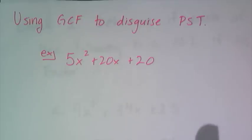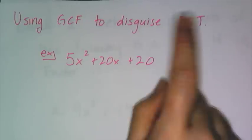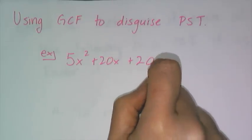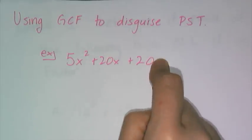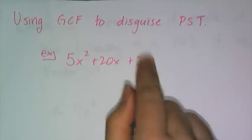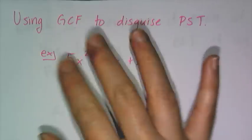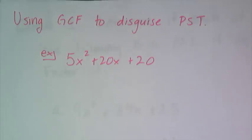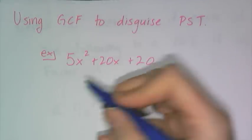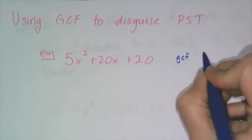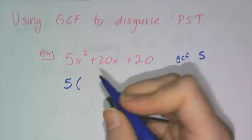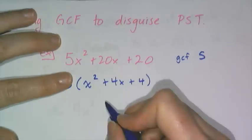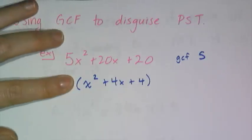I can also disguise perfect square trinomials using a GCF. For example, 5x squared plus 20x plus 20. Always look for a GCF before factoring because it makes the numbers smaller and easier to work with. Here, all terms are divisible by 5, so factor out 5 to get x squared plus 4x plus 4. Then ignore the 5 for now and look at what remains.